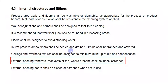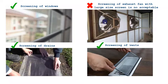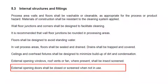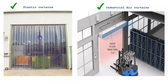External openings such as windows and fans should have insect screens with small mesh size — you need to screen not only windows but exhaust fans as well. Large-size screen mesh is not acceptable. Vents should also be screened. External opening doors shall be closed or screened when not in use. If that is not possible due to processing needs, use plastic curtains or industrial air curtains to avoid direct entrance of pests like flies. Both are acceptable.